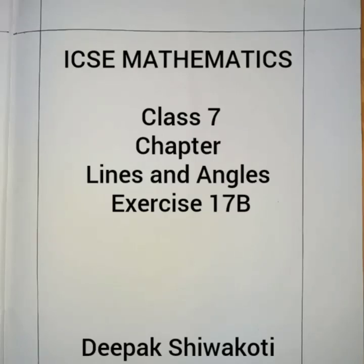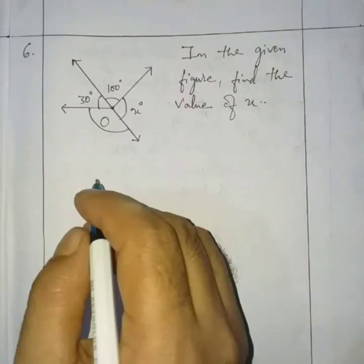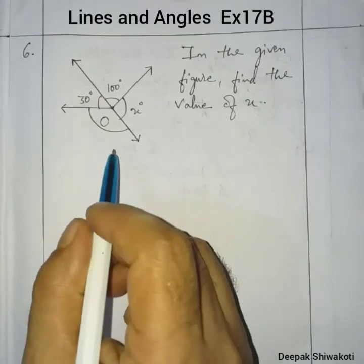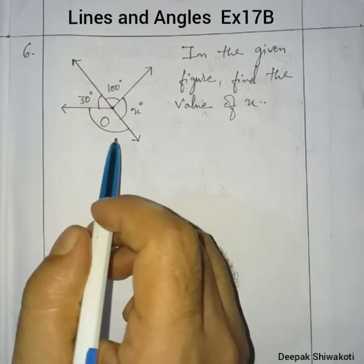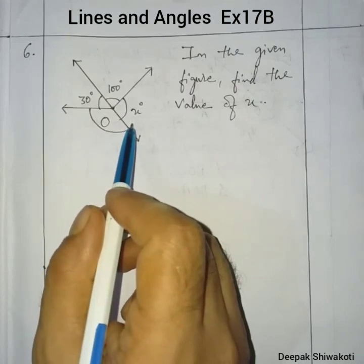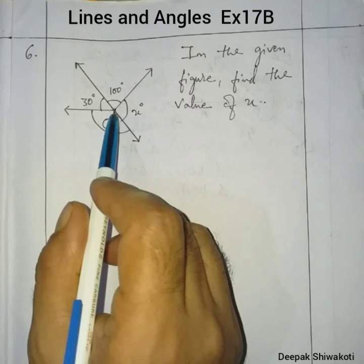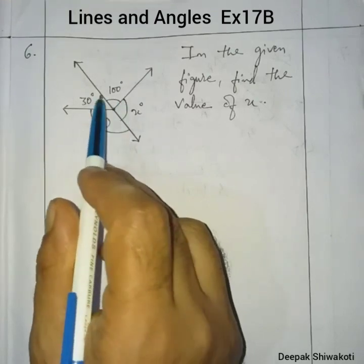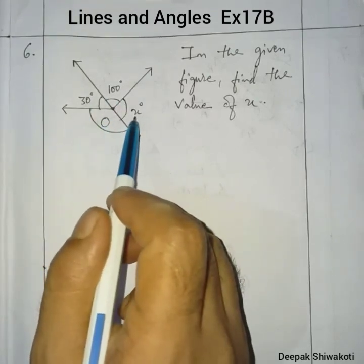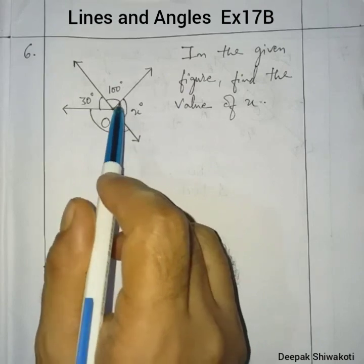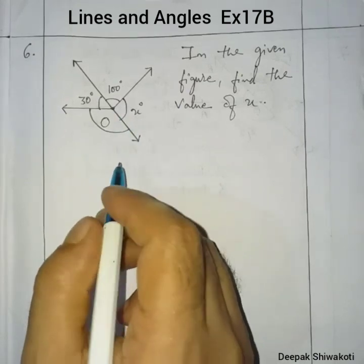Welcome to class 7 mathematics. We are in chapter Lines and Angles, exercise 17B, question number 6. In the given figure, find the value of x. We have to find the angle x using angles at a point.